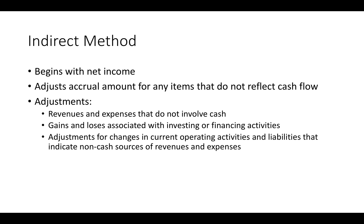Now the indirect method. The indirect method begins with the net income and then from there adjusts accrual amounts for any items that do not reflect cash flows. These adjustments include revenues and expenses that do not involve cash, gains and losses associated with cash investing or financing activities, and adjustments for changes in current operating activities and liabilities that indicate non-cash sources of revenues and expenses.